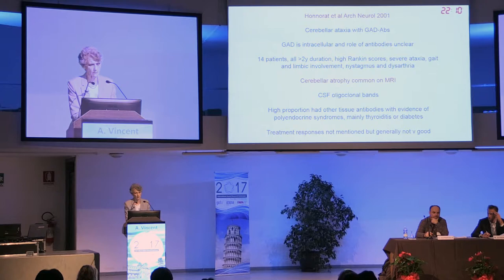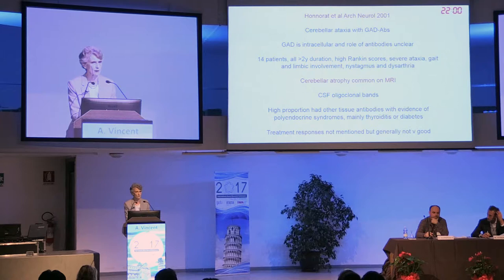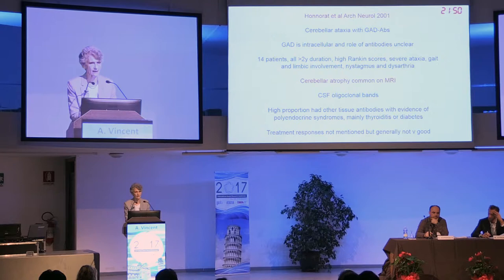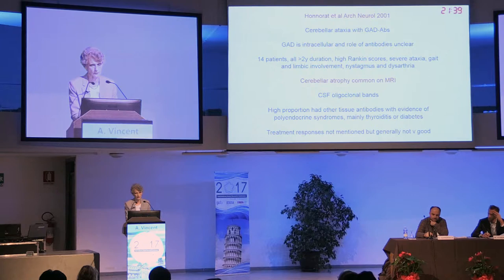Unfortunately, they were already well-developed cases, all more than two years' duration. They had high ranking scores - modified ranking scores for severity - with severe ataxia, gait and limb involvement, nystagmus and dysarthria. Most had cerebellar atrophy on MRI, so the cerebellum had already been damaged. What's more, a high proportion had other tissue antibodies with evidence of polyendocrine syndromes - mainly thyroiditis or diabetes. All of this suggests they are patients who react autoimmunely to various challenges. Probably the GAD antibodies are actually a secondary effect of the damage to the Purkinje cells. Nevertheless, they seem to be a biomarker for an autoimmune type of cerebellar ataxia.